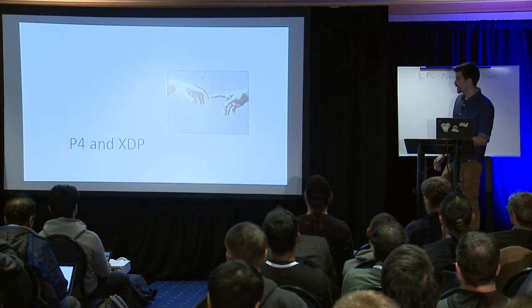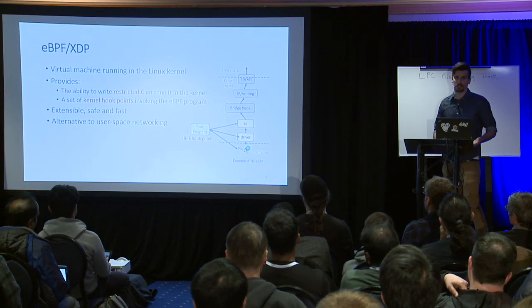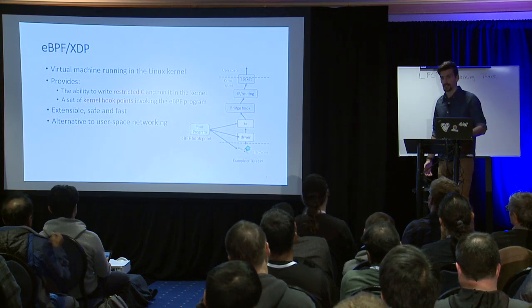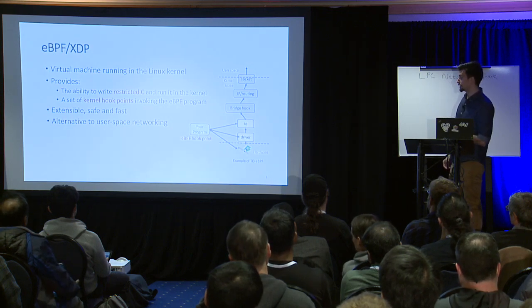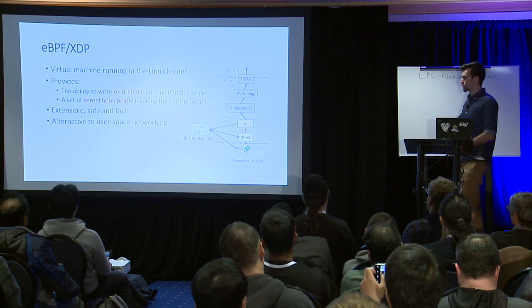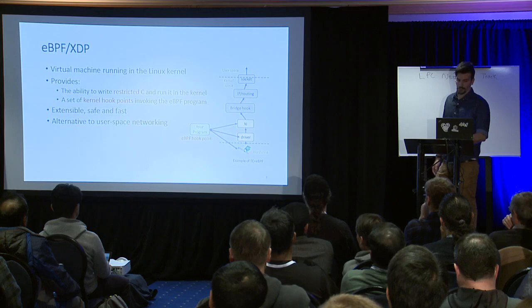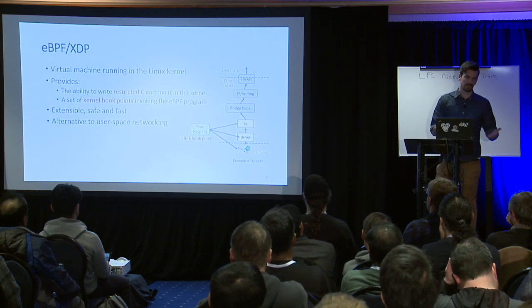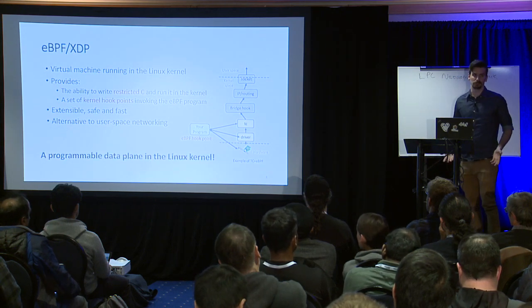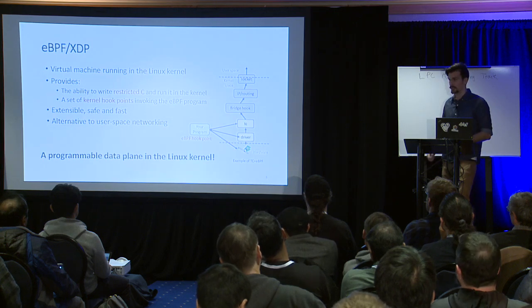So how do P4 and XDP work together? eBPF is a virtual machine running in the kernel. It provides a way for you to write restricted C code and run it in the kernel. You can use it on a different set of hook points — XDP, eBPF, TC — wherever you want to insert it into the stack. It's accessible, safe, and fast. It's also an alternative to user space networking, so we're actually using the kernel, not just DPDK and user space stacks. Most interestingly, it's a programmable data plane in the kernel, because you can program your own programs and load them into your data path — and that is exactly what P4 is also meant for.